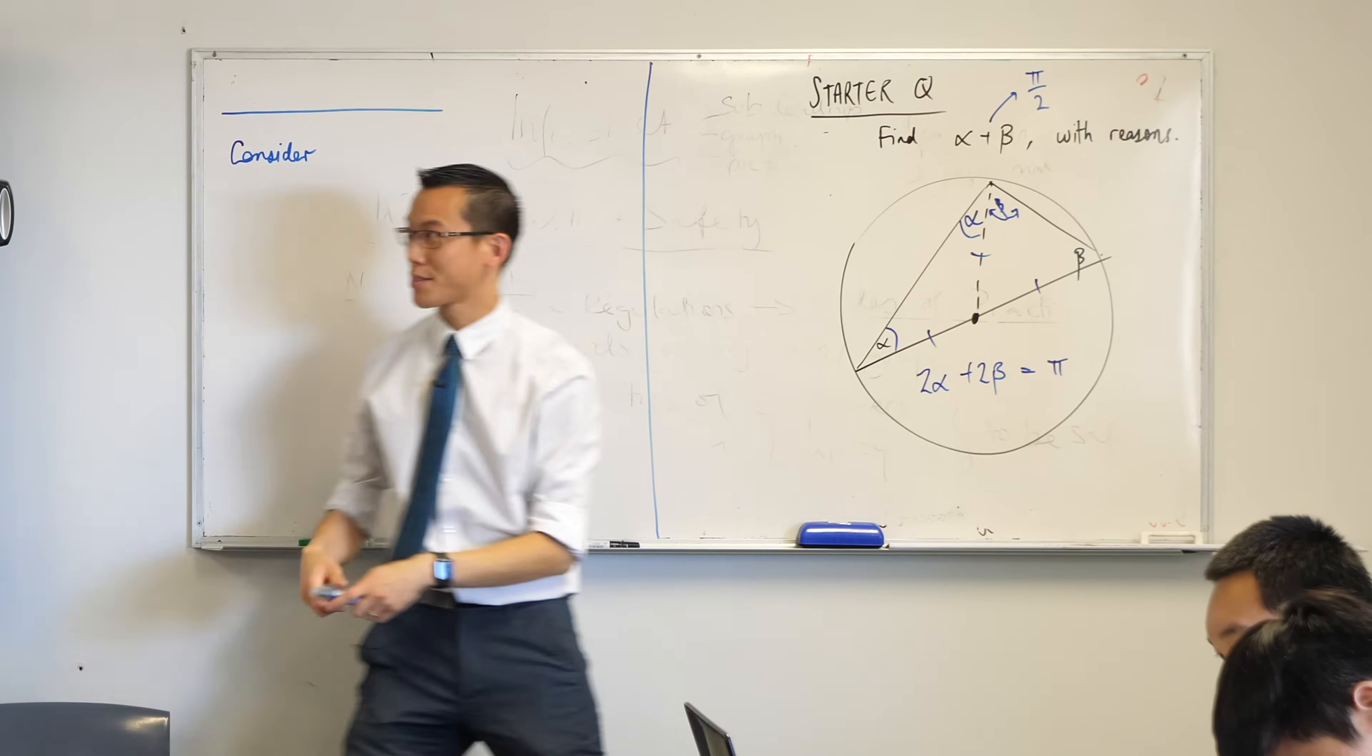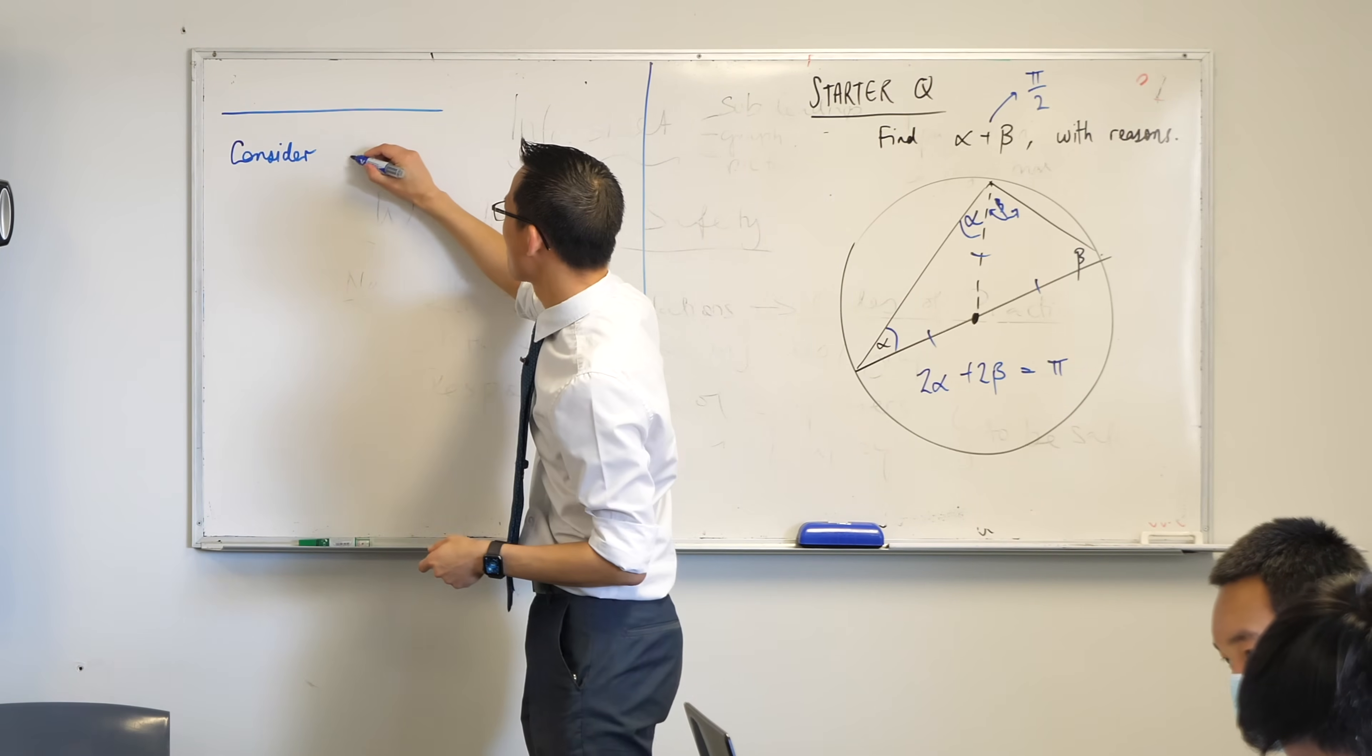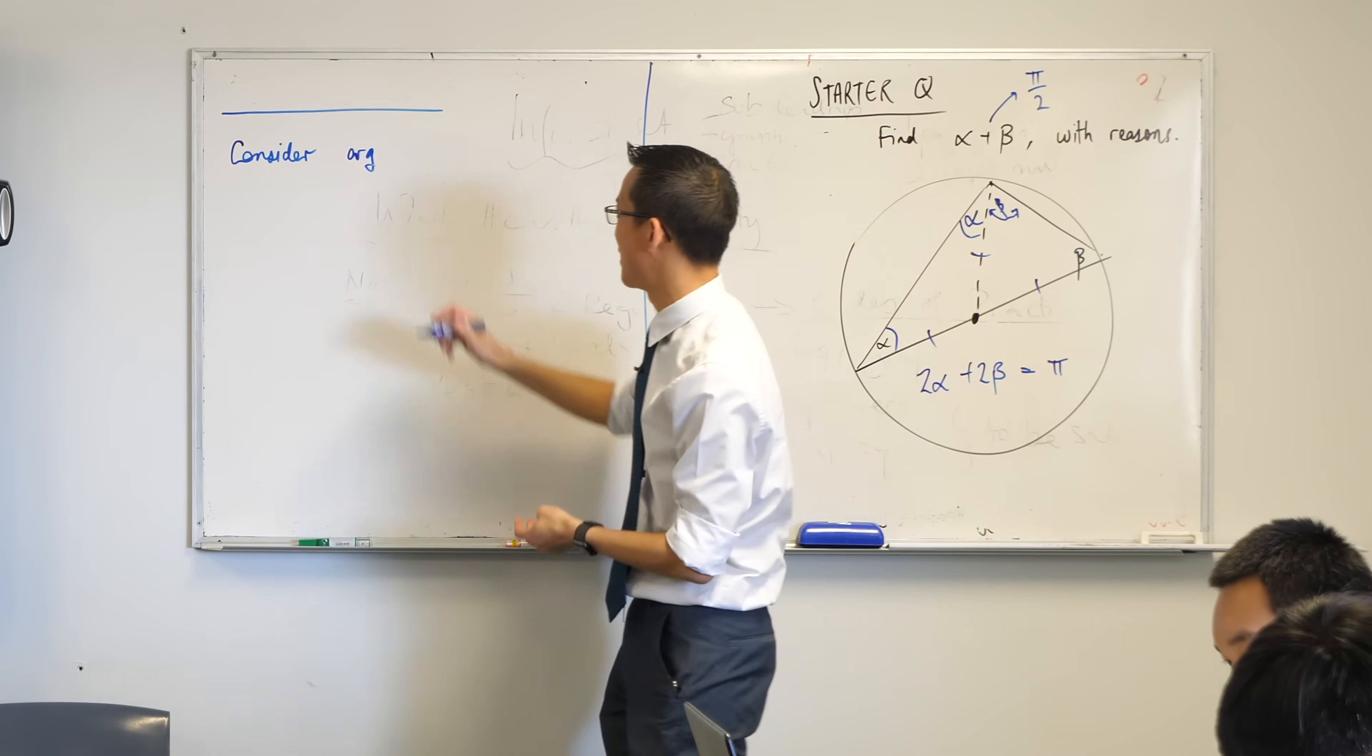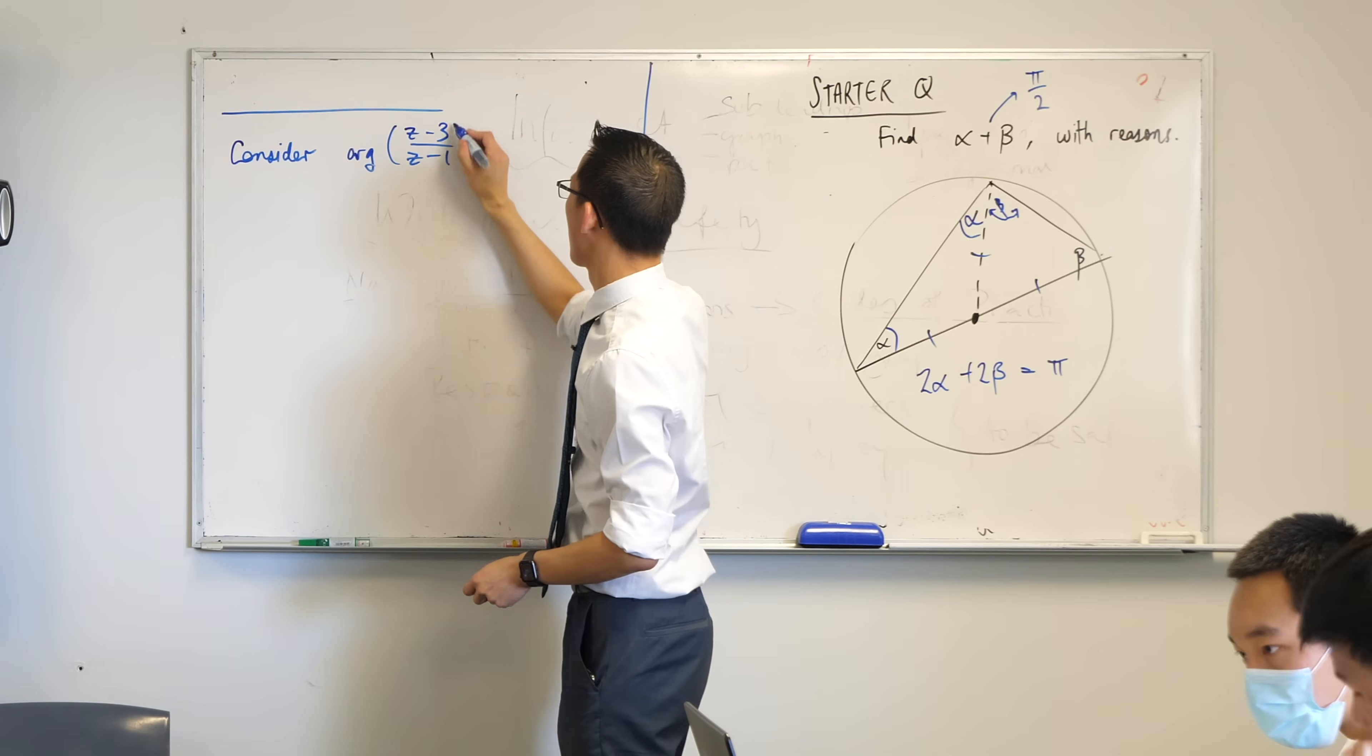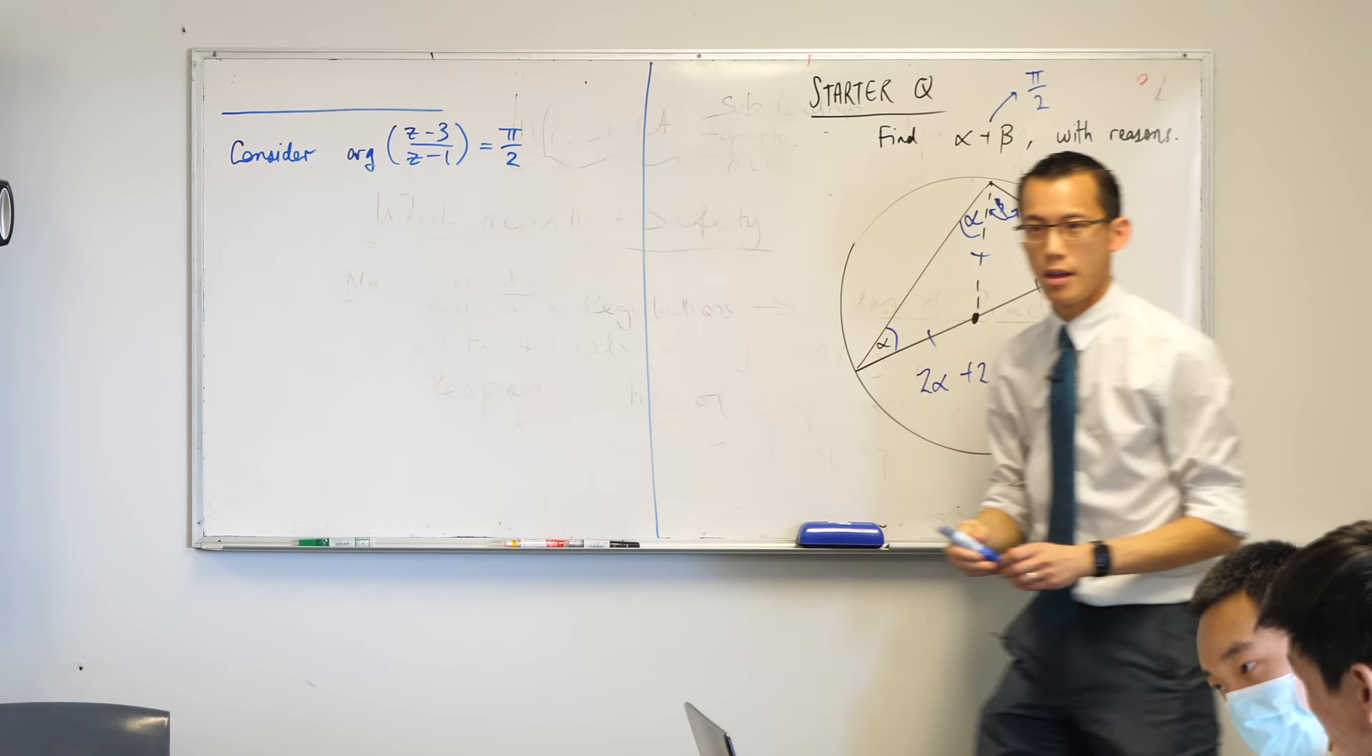Rule it off. Leave space for a heading. I'll give it to you in due time. And I'd like you to write down the following equation underneath your empty heading. Argument of z take away three, z take away one equals pi on two.